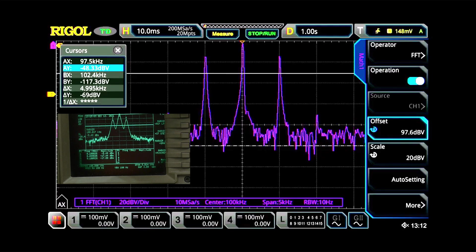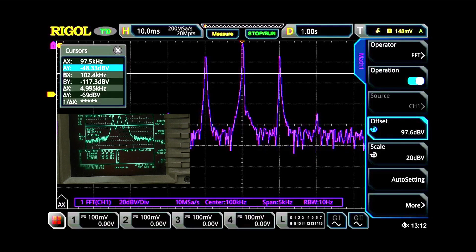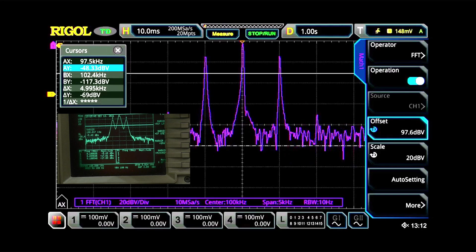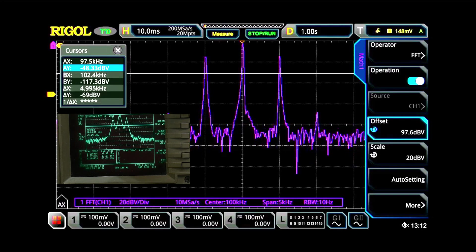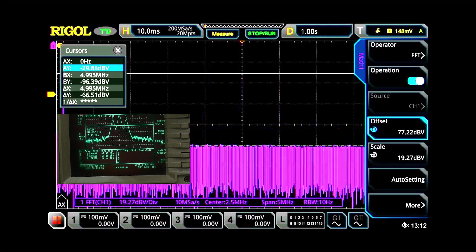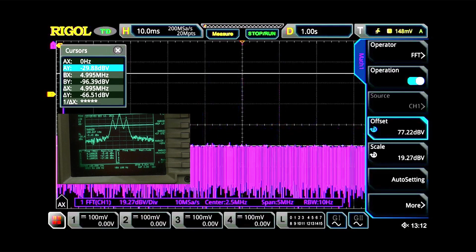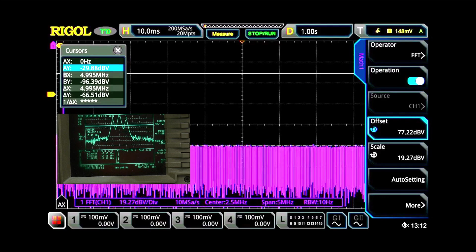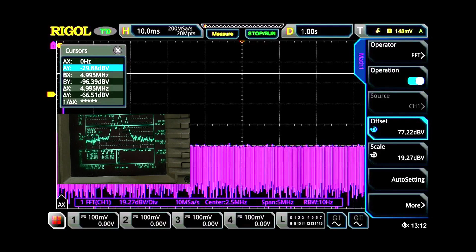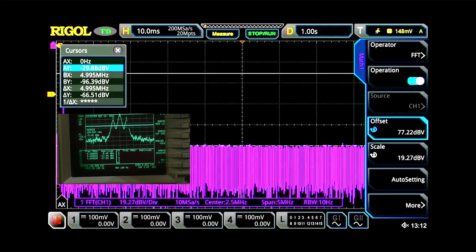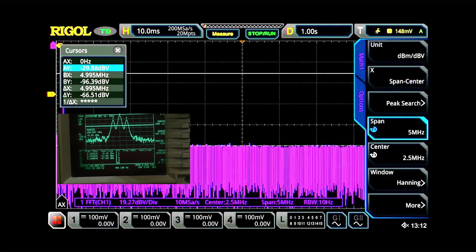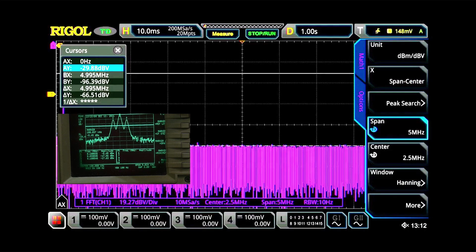You can set start stop. You can set center span. You can set scale. You can set offset and stuff. There's a button here called auto setting. Let's hit auto setting and see what happens. So you don't want to do that. It just goes nuts. What are you looking at? What are you trying to do? And so it's set our center at two and a half megahertz and our span at five megahertz.